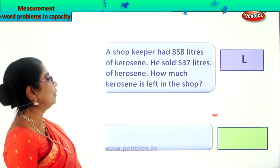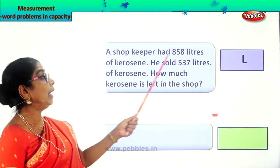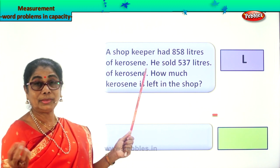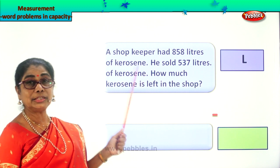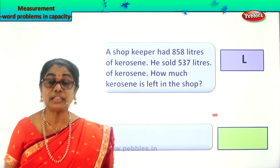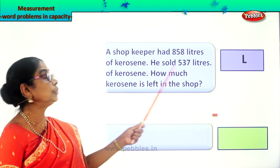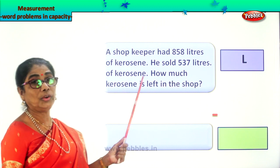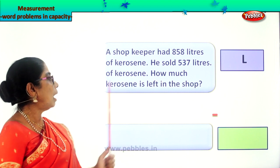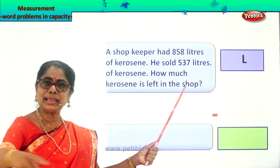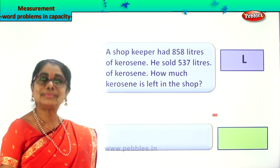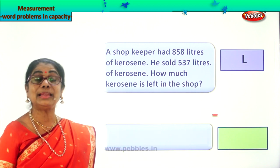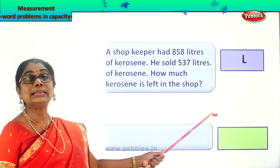Let's read together. A shopkeeper had 858 liters of kerosene in a big drum. He sold 537 liters of kerosene oil. The question is: how much kerosene is left in the shop — how much is left in that drum? So much is there, so much is sold out — he wants to know what is remaining. Certainly that's a subtraction problem.